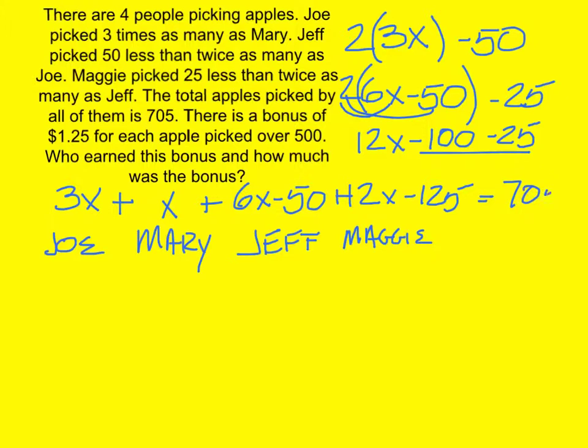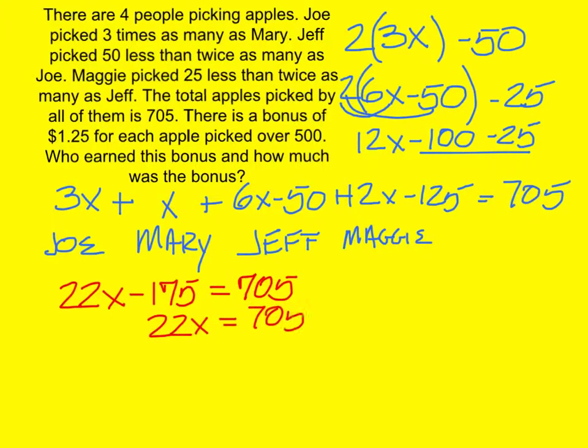And the total was 705. How many X's did we end up with? 22. 3 and 1 is 4 plus 6 is 10 plus 12 is 22. And then we have minus 50 and minus 125. What's that? Minus 175. And of course it's equal to 705. Do I add or subtract 175 on the right? Add it. And when I add 175, what do I get? 880.